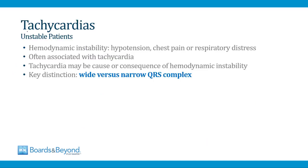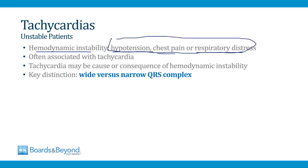Now let's talk about evaluating tachycardic rhythms in unstable patients. When we say a patient is hemodynamically unstable, we usually mean they have hypotension, chest pain, or respiratory distress of acute onset, and they often have a fast heart rate — a tachycardia. In clinical practice, sorting this out is tricky because the tachycardia could be causing the patient to be unstable, or it could be a consequence of the instability. For example, a patient who is hemorrhaging will have a tachycardia as a response to the hemorrhage, not from an arrhythmia.